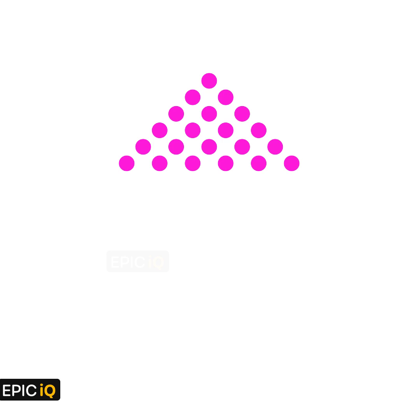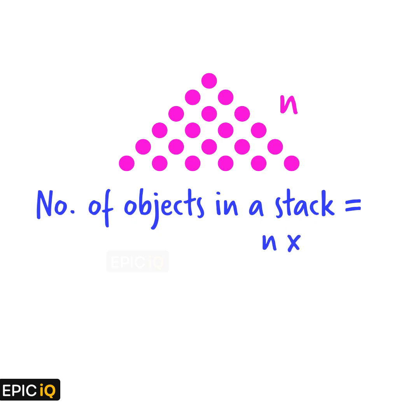So, we find out that the number of objects in a stack with side n will be the same as the sum of first n positive numbers, which is n into n plus 1 by 2.